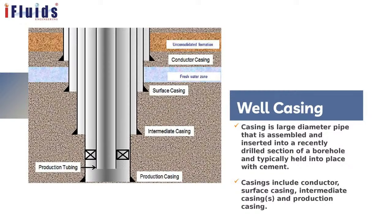The underground part of the well consists of casings. Normally a well has four casings: conductor casing, surface casing, intermediate casing, and production casing. Finally there is the production tubing through which production is carried out. The square box shown in the diagram represents the packer, which blocks wellbore pressure from entering the casings, so that well bore pressure acts only within the tubing.